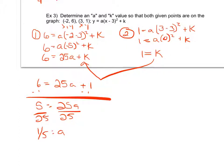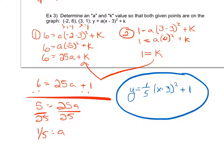Now that I know both a and k, I can go ahead and write my general equation. My general equation to have both of these points on the graph is going to be y equals one over 5 times x minus 3 squared plus a k value of 1.